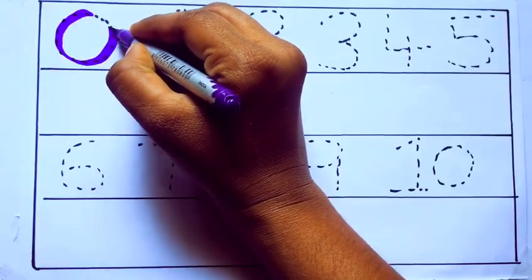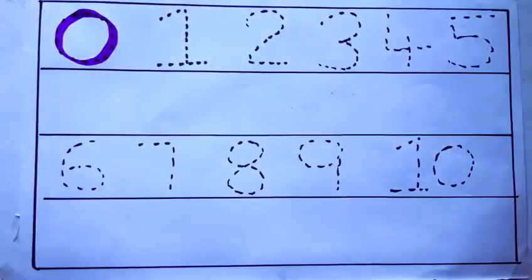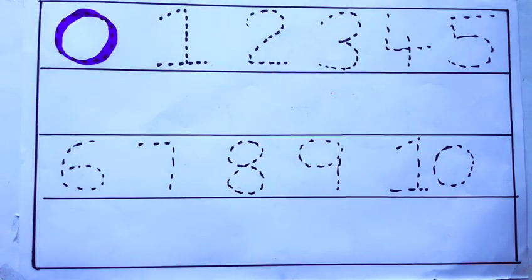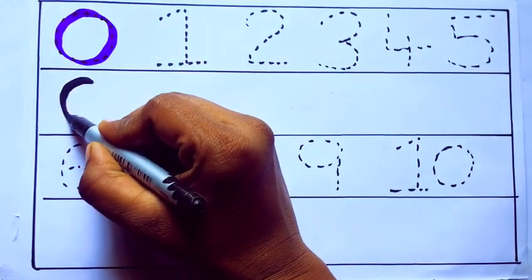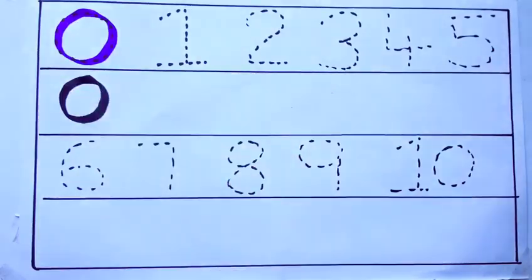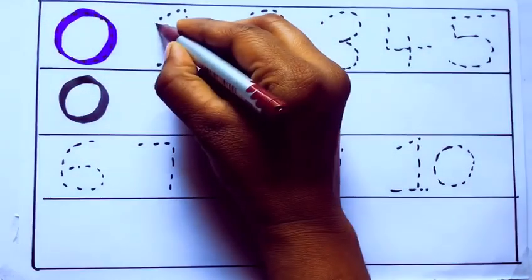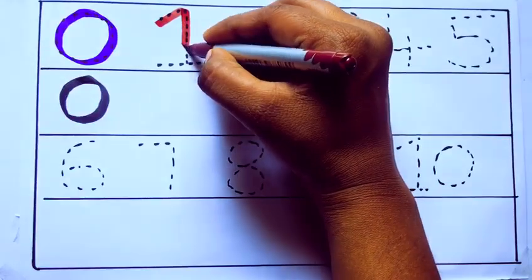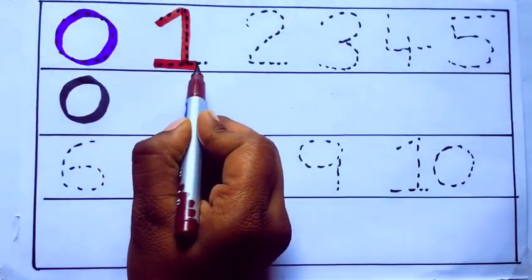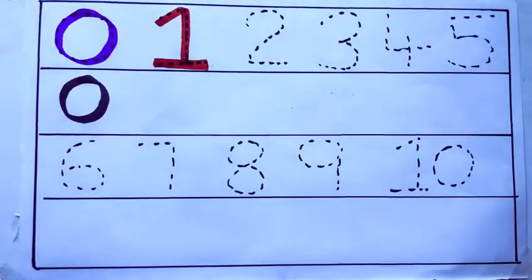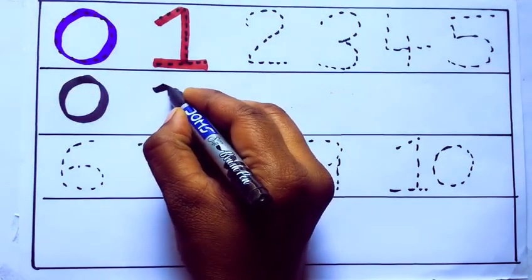Let's draw numbers. Violet color: 0, z-e-r-o, zero. Brown color: 1, o-n-e, one. Number 1.